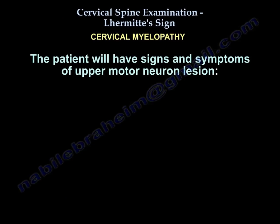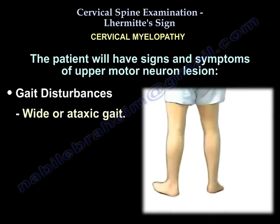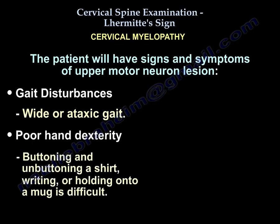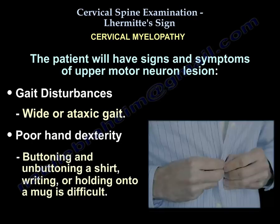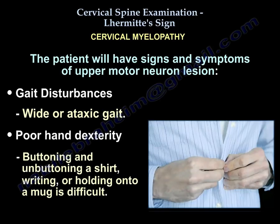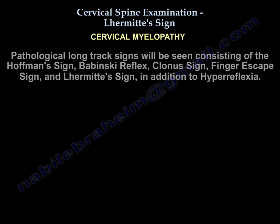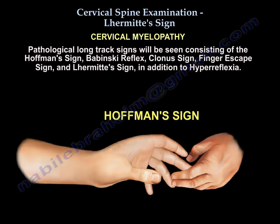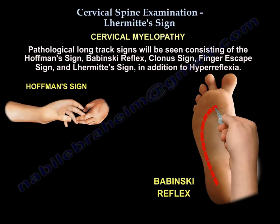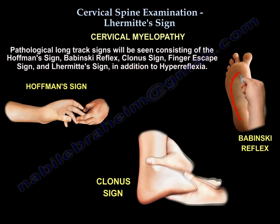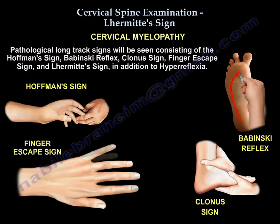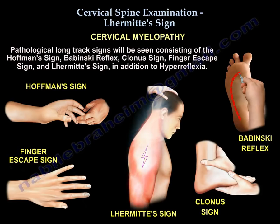The patient will have signs and symptoms of upper motor neuron lesion, such as gait disturbance, wide or ataxic gait, and poor hand dexterity — such as difficulty buttoning and unbuttoning a shirt, writing, or holding a mug. Pathological long-tract signs will be seen, consisting of Hoffman's, Babinski, clonus, finger escape, and Lhermitte's signs, in addition to hyperreflexia.